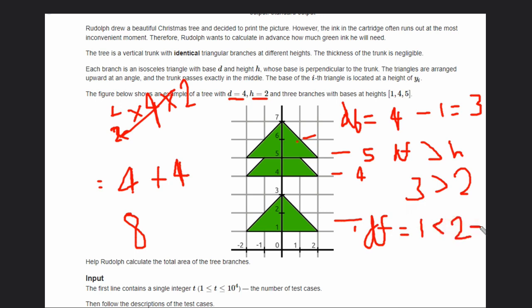So whenever this condition hits, what we will do? We will calculate the area which is superimposed. So the current area of the triangle will be four, and what we will subtract? We will subtract half into difference. Difference is what? One.